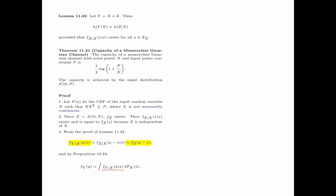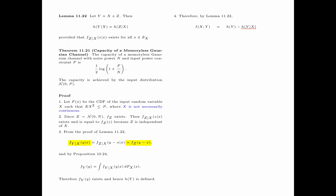By Proposition 10.24, the PDF of y, f_y(y), equals the integral of f(y|x) with respect to dF_x, regardless of the distribution of the input random variable x. Therefore, the PDF f_y(y) exists, and hence the differential entropy of y is defined. Now consider I(x;y) = h(y) − h(y|x), where h(y|x) can be determined from f(y|x). By Lemma 11.22, h(y|x) = h(z|x), and h(z|x) = h(z) because z is independent of x.